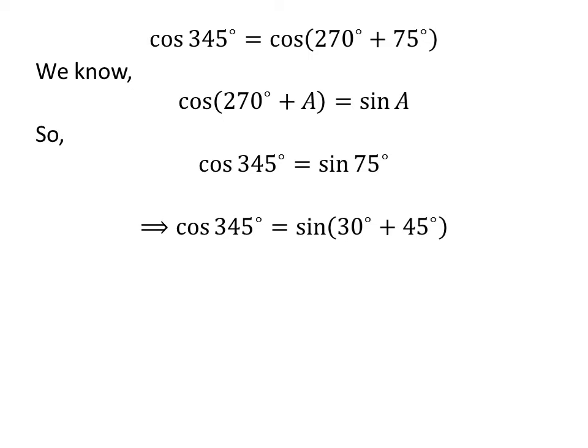Again, 75 degrees is equal to 30 degrees plus 45 degrees. So cosine of 345 degrees is equal to sine of 30 degrees plus 45 degrees.